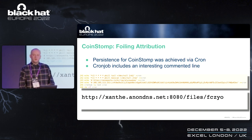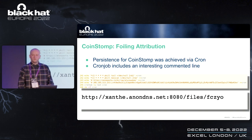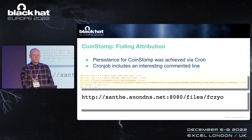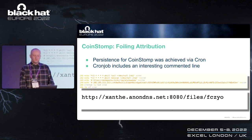CoinStomp made use of Cron as a persistence mechanism and registered a Cron job under the root user. Rather than using persistence to launch malicious payloads, CoinStomp instead used the Cron job to kill the tailing and mass scan utilities — the latter often used to find vulnerable servers. We noticed an interesting commented line in the Cron job referencing the code hosting service Anon Pasta, which appeared to have been used to host an additional payload but was commented out.